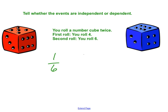And then the second roll is you roll a six. So how many sixes are there? One. Out of how many sides? Six. So did rolling a six or rolling a four on the first one change your probability of rolling a six on the second one? No, it did not.